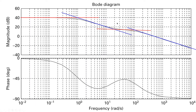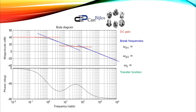So we have now determined our three break frequencies: pole 1, one zero, and pole 2. We have a DC gain of 40 dB. Let me use this information to set up the transfer function. The DC gain is 40 dB.